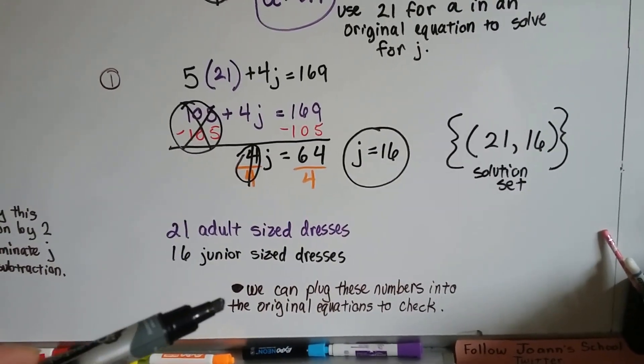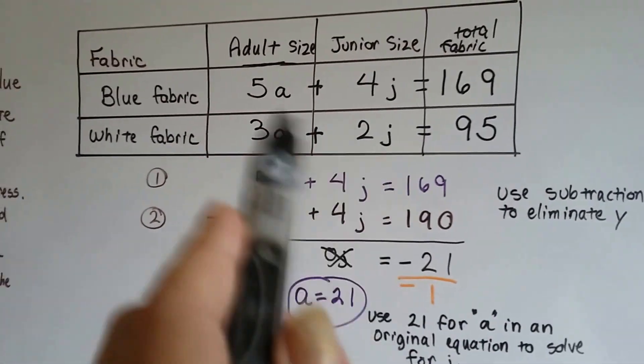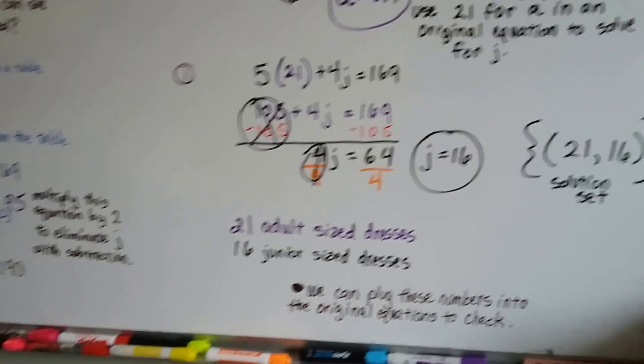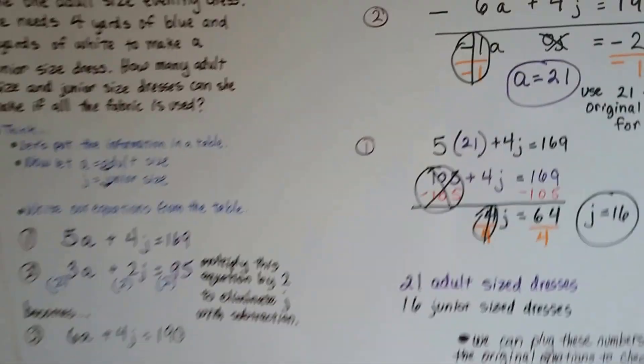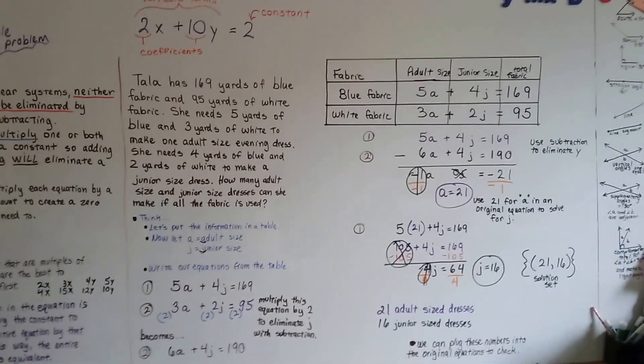We can plug these numbers into the original equation up here, into the original system of equations, to check them to make sure they're right. So do you see how I put the information into a table and it helped me organize it to write my system of equations?